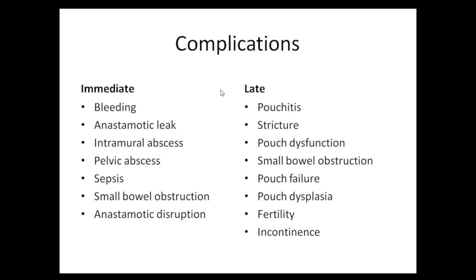Pouchitis presents with increased frequency, occasional bleeding, pain, tenesmus, and urgency. On endoscopy, the stapler line is intact but the pouch shows features of inflammation; biopsy is mandatory. The Pouchitis Disease Activity Index (PDAI) determines treatment. First-line treatment is bowel-specific antibiotics. If not responding, two antibiotics are combined. If still not responding, probiotics are added. Very rarely, immunobiologics like azathioprine or infliximab are needed. If none of these work, the pouch is labeled as dysfunction and must be removed with conversion to permanent end ileostomy.